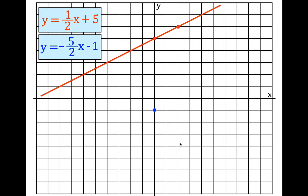The slope is minus five-half, so I'm going to go down five and over two — one, two, three, four, five over two — and I should have another point right there. I draw that line, and you can see that those two lines intersect right at this point. That means this point and this point only is the solution for these two lines.